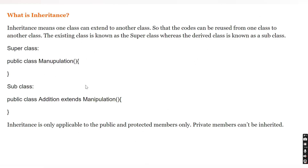To summarize what we learned in this video: inheritance means one class can extend another class using the `extends` keyword, so that code can be reused. If you declare a method in a parent class, there's no need to redeclare it in the child class — by default, the child class will inherit it. The existing class is known as the superclass or parent class, and the derived class is known as the subclass or child class.